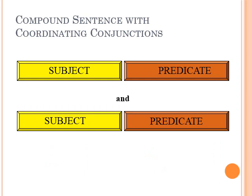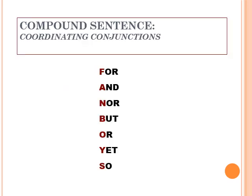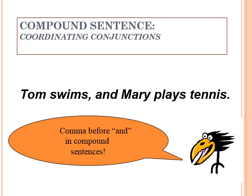The second type is a compound sentence. A compound sentence has a subject and a predicate but contains two sentences, each giving complete meaning with subject and predicate, linked together with a coordinating conjunction. For example, 'Tom swims and Mary plays tennis.' These coordinating conjunctions are commonly remembered as FANBOYS: for, and, nor, but, or, yet, so. In punctuation, there will be a comma after the first independent clause and before the coordinating conjunction.